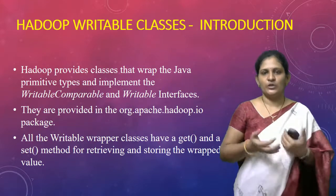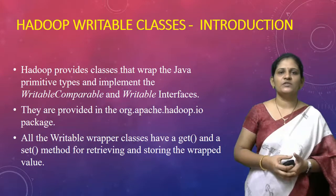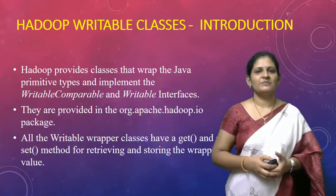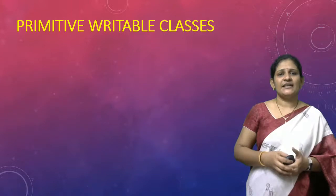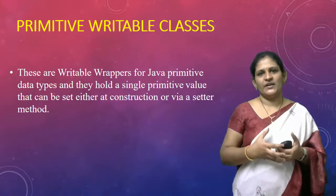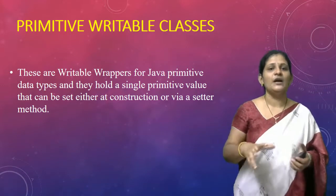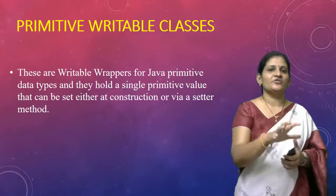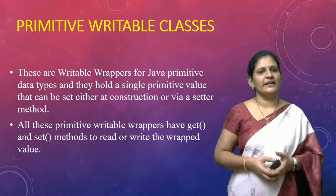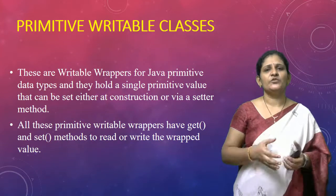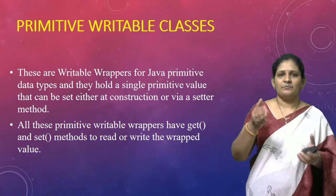Whenever you want to store data into a writable object, you use the set method. To retrieve data from that object, the appropriate method to use is the get method. These writable classes hold only a single primitive value — not more than one. Values can be set either at construction time using a constructor or by using the set method, and retrieved using the get method.